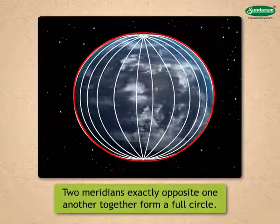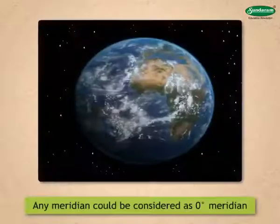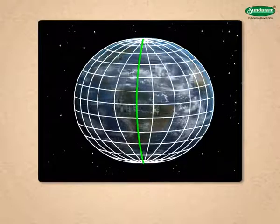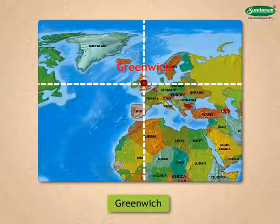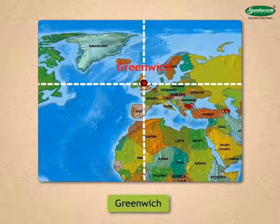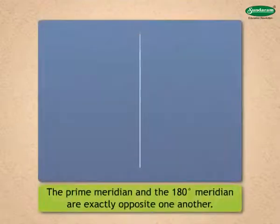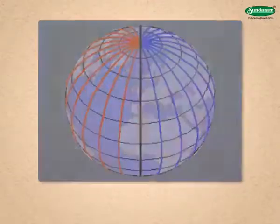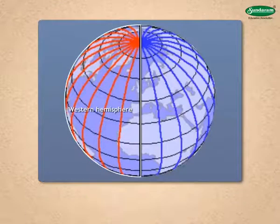Two meridians exactly opposite one another together form a full circle. Any meridian could be considered as the zero-degree meridian since all of them are of the same length. However, the meridian that passes through Greenwich, a town in United Kingdom, is considered to be the zero-degree meridian and is known as the prime meridian. The prime meridian and the 180-degree meridian are exactly opposite one another and together form a full circle. This divides the earth into two equal parts: the western and eastern hemispheres.